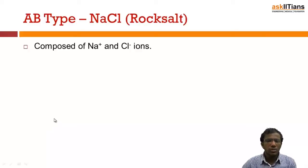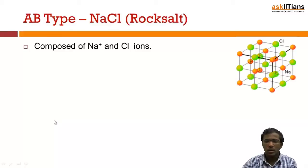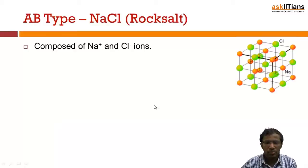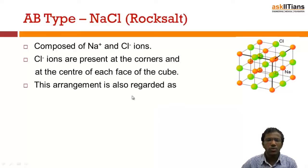It is composed of positively charged sodium ions and negatively charged chloride ions. This is the structure of NaCl. So here, let's see the arrangement of chloride ions.